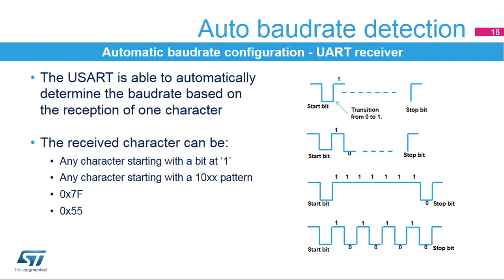For a 0x7F character frame, the baud rate is updated first at the end of the start bit, then at the end of bit 6. For a 0x55 character frame, the baud rate is updated first at the end of the start bit, then at the end of the bit, and finally at the end of bit 6. In parallel, another check is performed for each intermediate transition of the RX line.